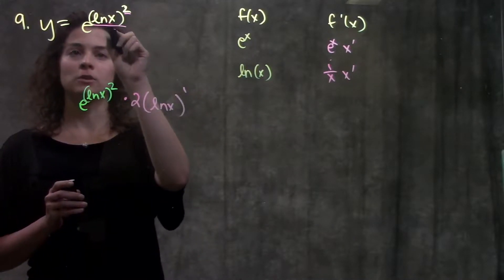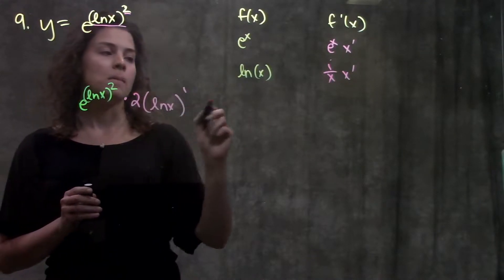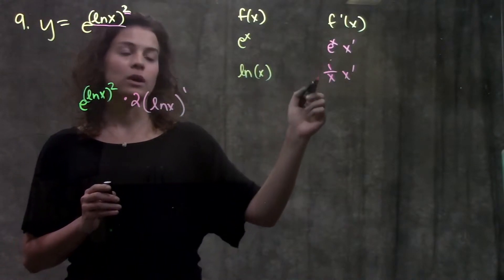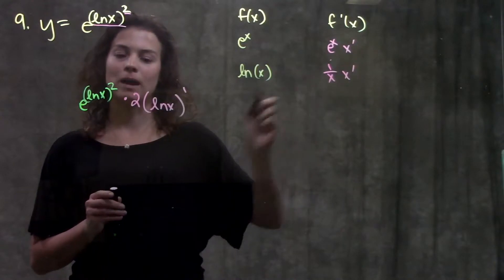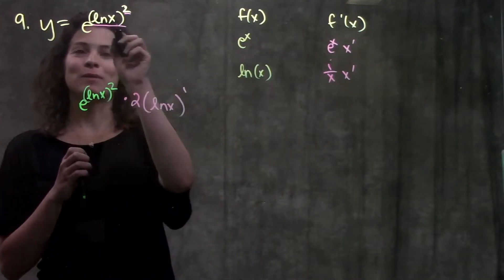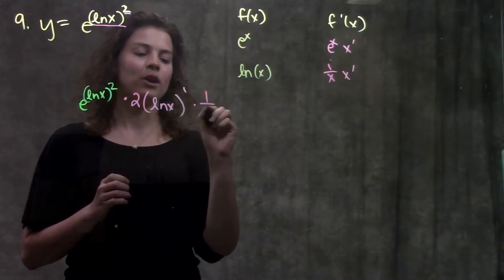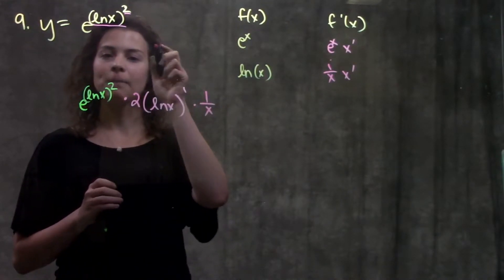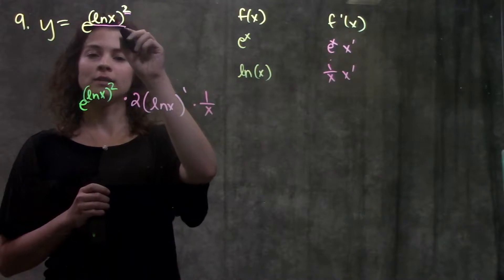Now I take the derivative of this innermost part here, the ln x. Remember, the derivative of ln x is just 1 over x times x prime. Okay, so I'll use pink again. So the derivative of ln x just leaves me with 1 over x times x prime. In this case, the derivative of x is just 1.